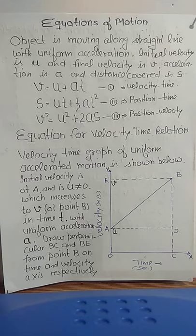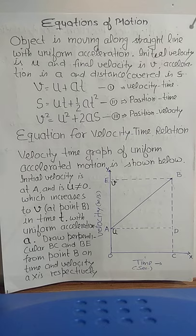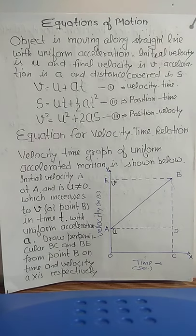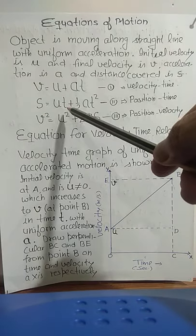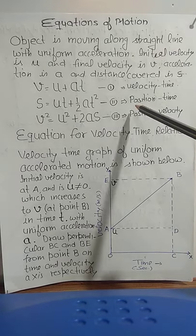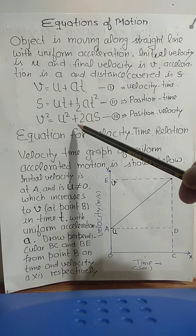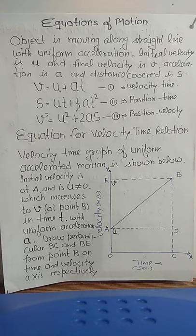Students, U, V, A, T, S are initial velocity, final velocity, acceleration, time, and distance. There are three equations of motion. The first one is V = U + AT, and this relation is the velocity-time relation. The second equation is S = UT + ½AT², which is the position-time relation. The third equation is V² = U² + 2AS, and this is your position-velocity relation.